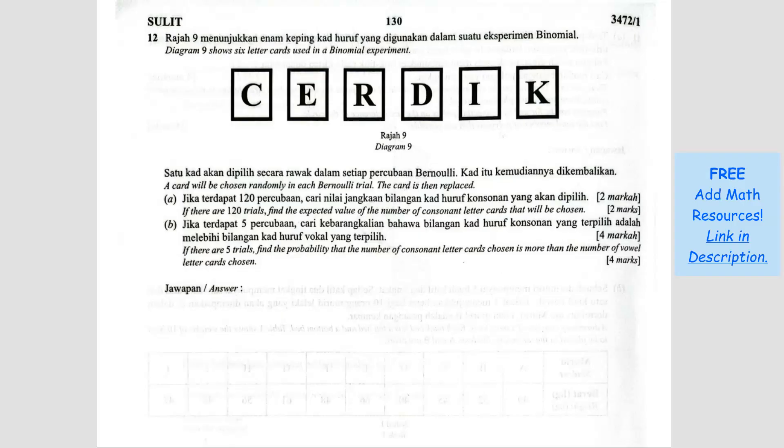If there are 120 trials, so 120 trials means what? Because this is a binomial, right? So N equals 120.